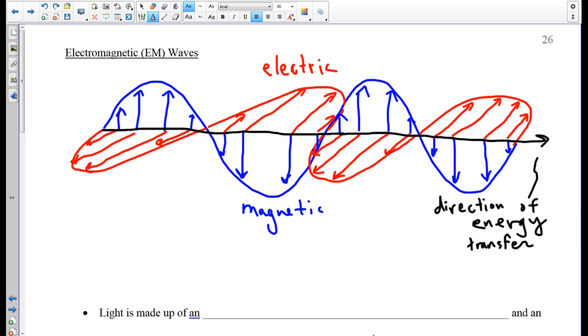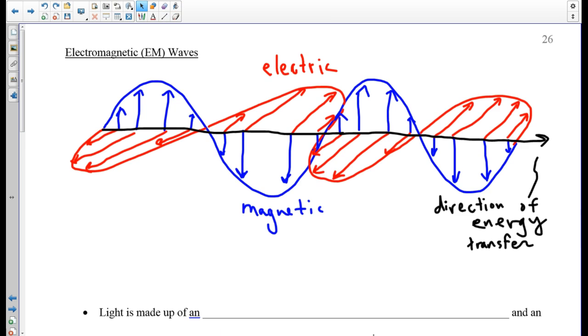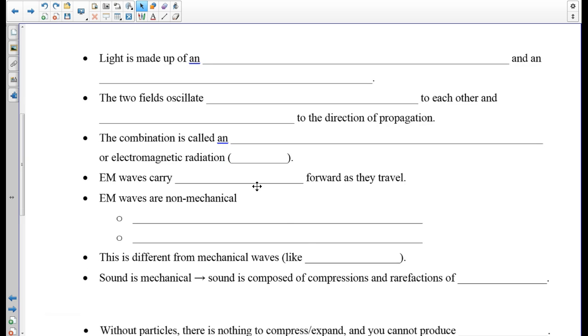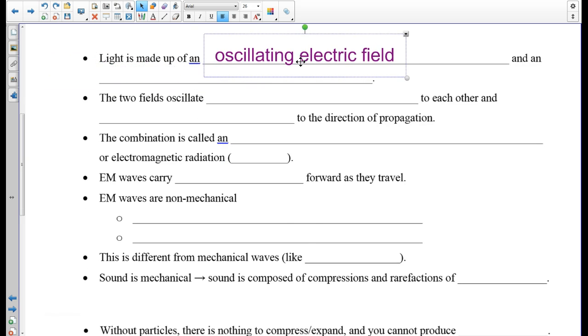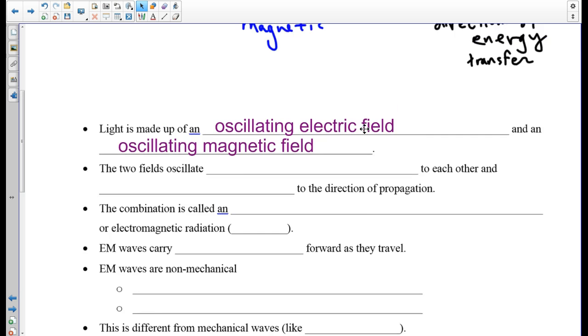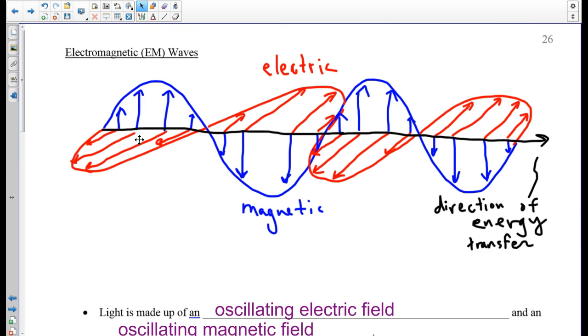Let's fill out some notes. Let's take down some notes, summarizing what we've learned. Light is made up of an oscillating electric field and an oscillating magnetic field. That's what those arrows represent. These arrows represent the field, and the field is what carries the magnetic and electric force.